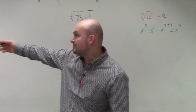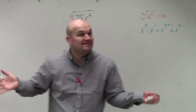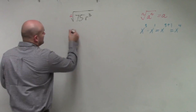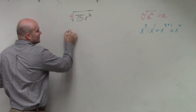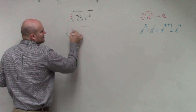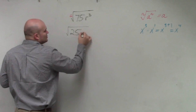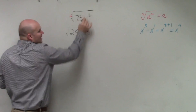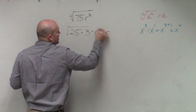So I look at my square numbers and ask: do any of those square numbers evenly divide into 75? The largest one that does would be 25. So we can do 25 times 3, and then rewrite the variable part as r squared times r.